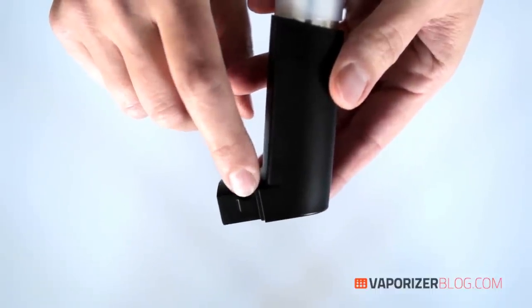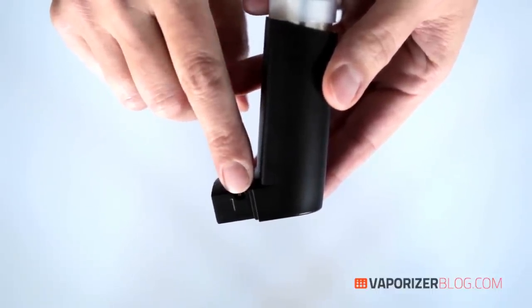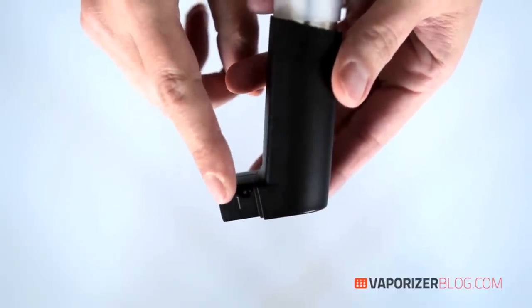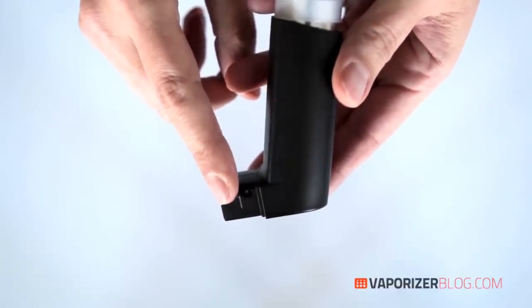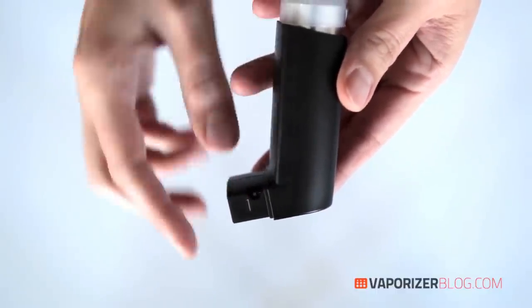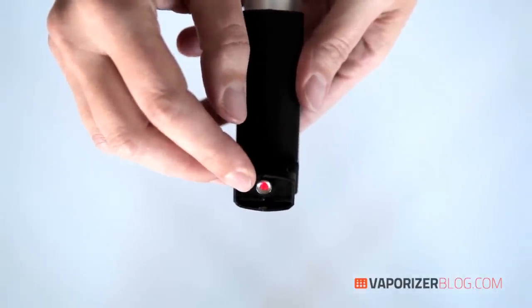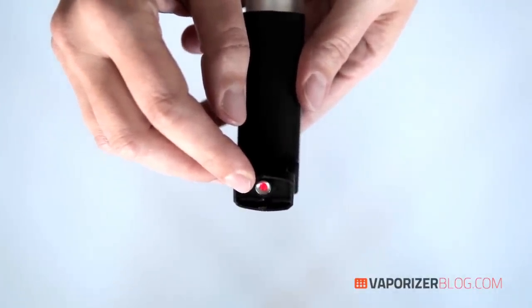Number one is 120 degrees Celsius 250 degrees Fahrenheit and it goes all the way up to number eight which is 220 degrees Celsius 430 degrees Fahrenheit and here on the front you have this red LED indicator light that lets you know when the unit is heating up and when it's ready to vape.